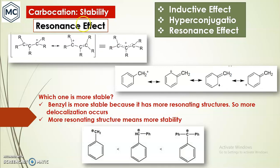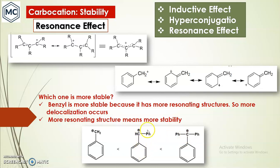Comparing benzyl and triphenylmethyl carbocations, the triphenylmethyl (trityl) carbocation is more stable. The positive charge in the triphenylmethyl cation is in resonance with all three phenyl rings, generating more resonating structures, while the benzyl cation resonates with only one phenyl group. More resonating structures means greater delocalization and higher stability.